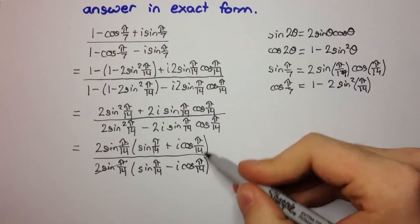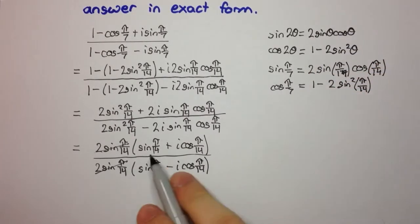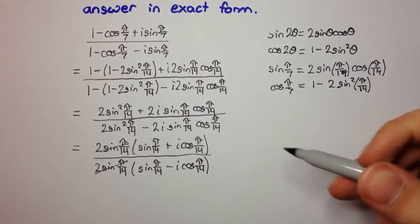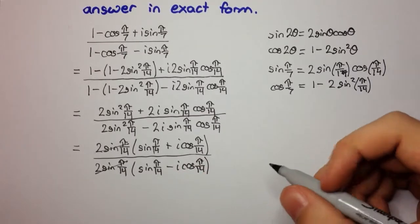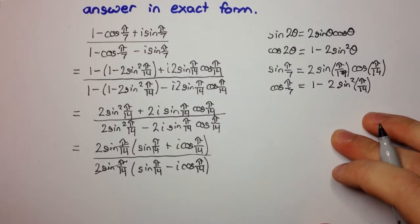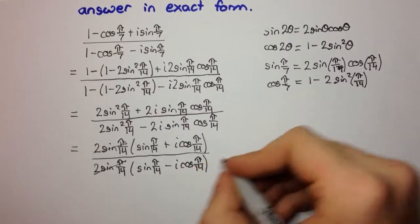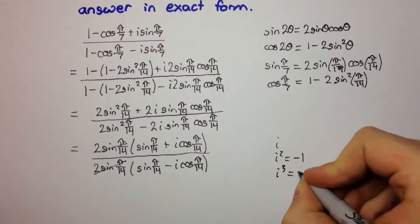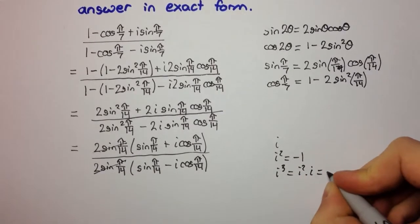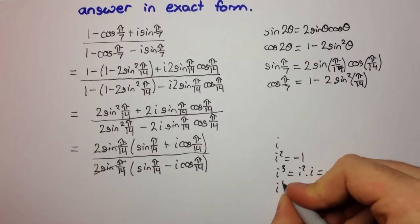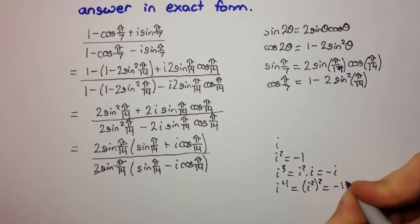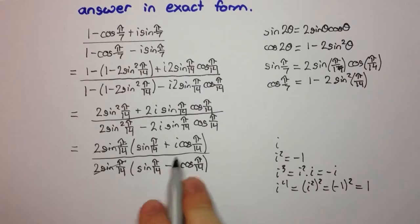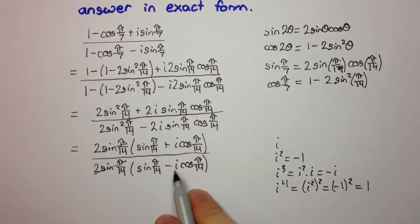We still can't apply De Moivre's theorem because this is sin plus i·cos, but we need cos plus i·sin. To manipulate it, recall that i² = −1, i³ = −i, and i⁴ = 1. We'll use these facts to rewrite the expression in the correct form.